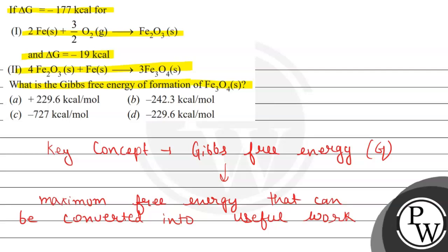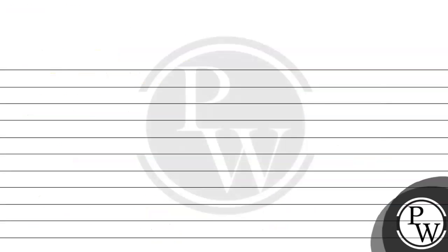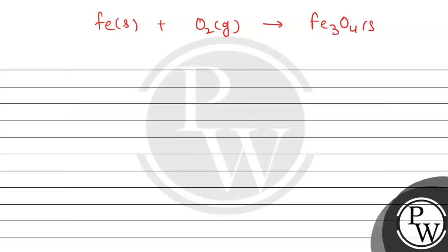Now, in this question, we have two reactions for which change in Gibbs free energy is given to us. Delta G represents change in Gibbs free energy. According to this, we have to find the Gibbs free energy for the formation of Fe₃O₄. So if we have one mole of Fe₃O₄ formation from iron and oxygen, that will be the formation reaction. We will write that: Iron solid plus Oxygen gas leads to the formation of Fe₃O₄. This is the reaction which is required.